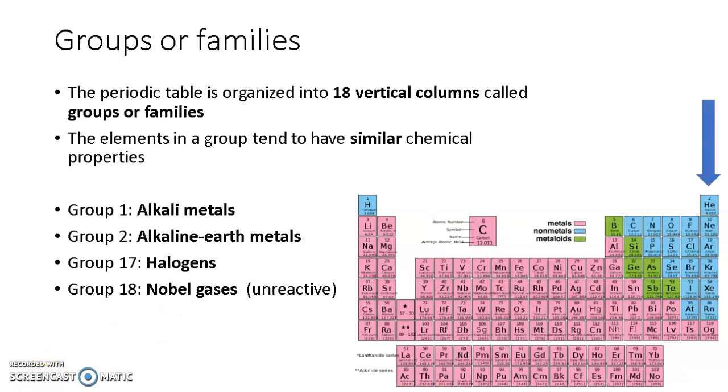The periodic table is organized into 18 vertical columns that are called groups or families. There are 18 of them. The elements in a group tend to have similar chemical properties.